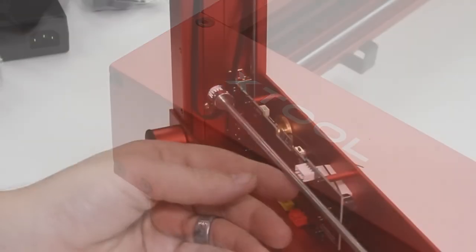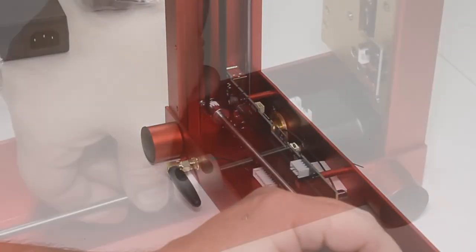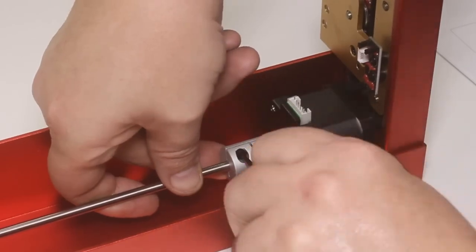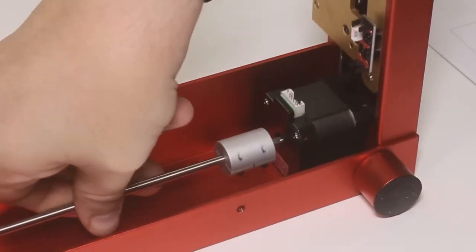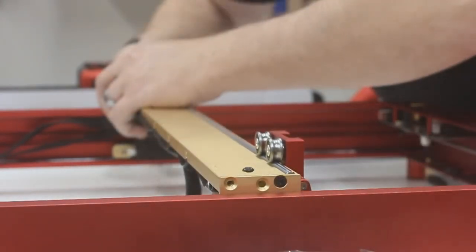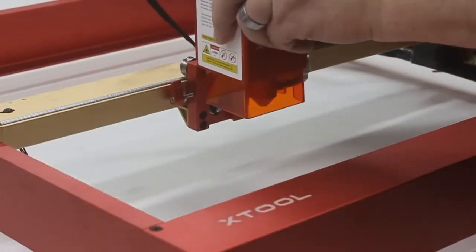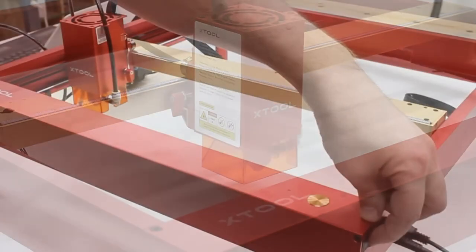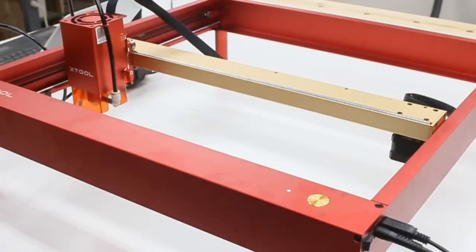Once the frame was screwed together, I could then add on the pulley for the belt and slide in and tighten the lead screw. After that, some wires got plugged in, the X rail got fastened onto the brackets, and the laser module got dropped into place. Then I just hit the power switch and it came alive.